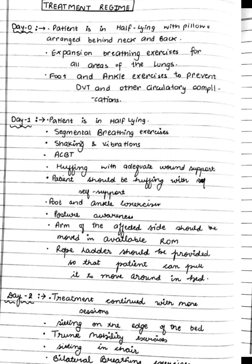On day 1, the patient is in half-lying. Segmental expansion exercises, shaking or vibration as necessary, and huffing and expectoration with wound support should be done. By end of the day, the patient should be huffing with self-support. Foot and ankle exercises continue. Posture correction is emphasized to prevent scoliosis on the scar side. Short, frequent sessions are better than few long ones. The arm on the affected side must be moved through the available range of motion, and a rope ladder should be provided so the patient can pull on it to move around in bed.